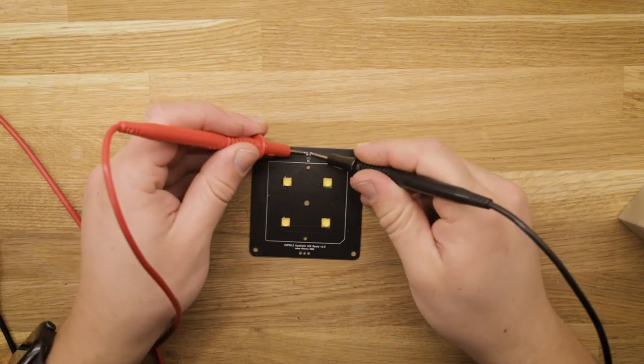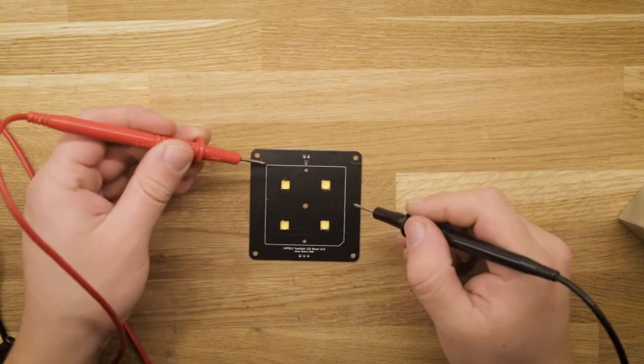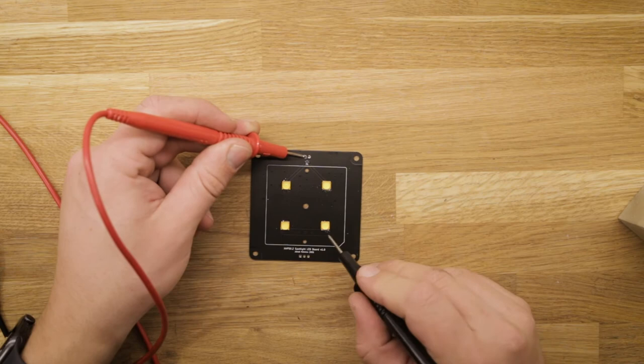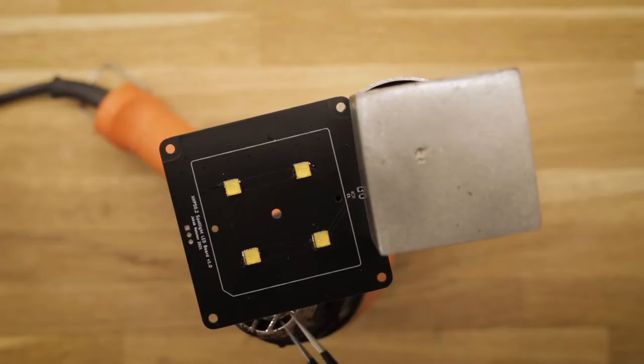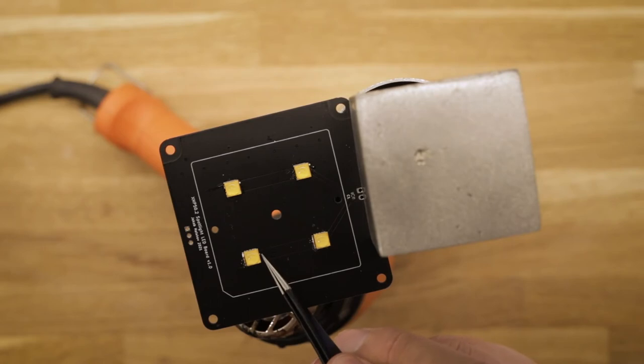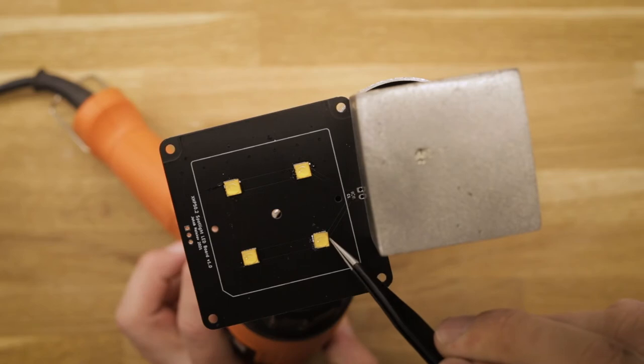Using a current limited power supply the PCB is tested and I quickly realize that only two of the LEDs are properly soldered, while the other two haven't properly aligned onto the solder pads. A little heat and poking quickly fix this. It's so satisfying to see the components snap into place.